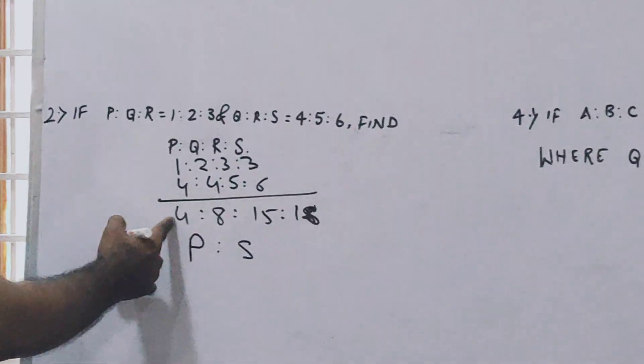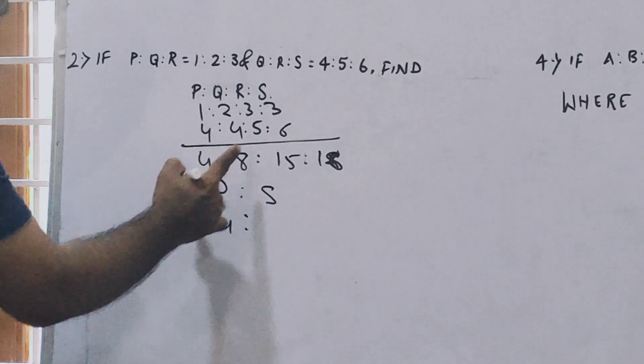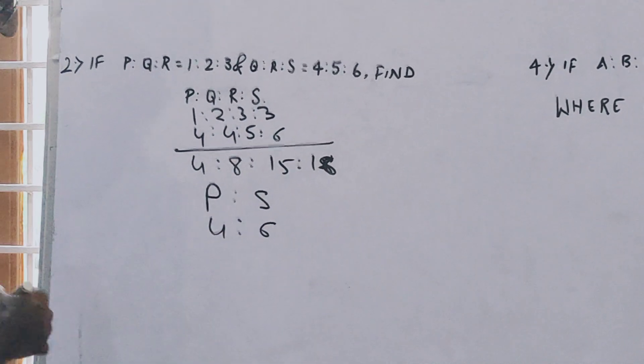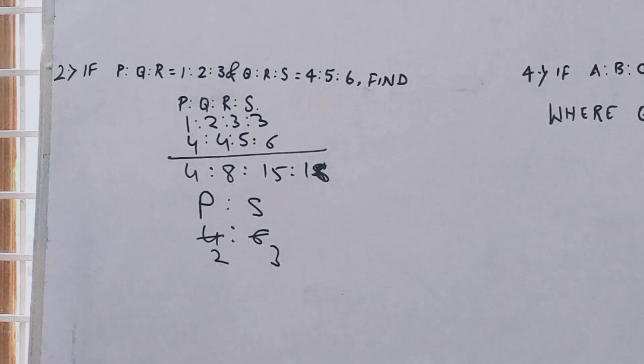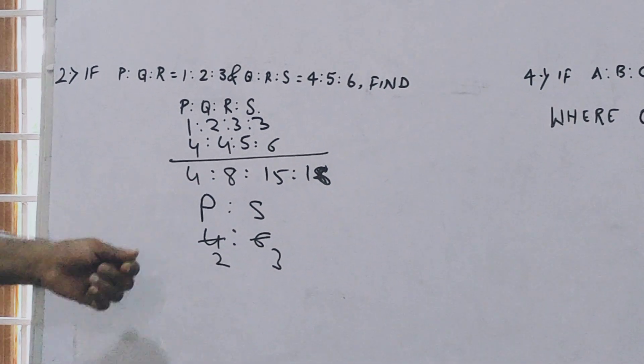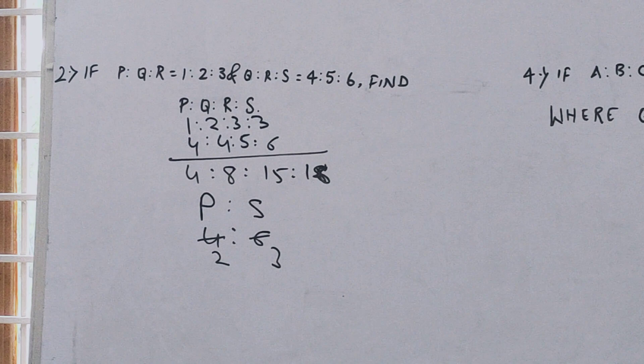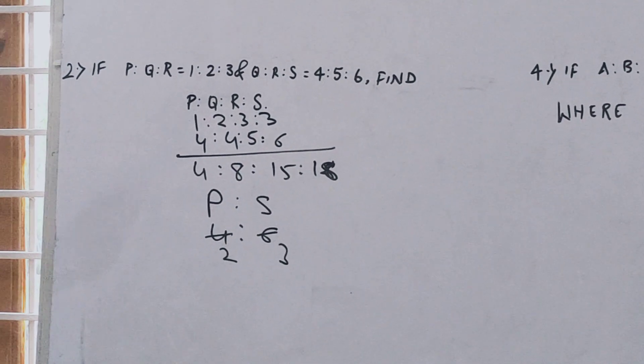If the question asks about P ratio S, suppose P ratio S, so P is 4 and S is 18, so 4 ratio 18. Again common factor 2, so 2 goes into 4 twice and 2 goes into 18 nine times. So your answer is 2 ratio 9 for P ratio S.